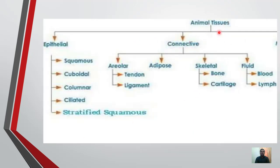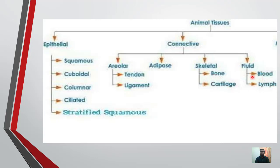Yeh ek flow chart diagram hai our topic ki, jis mein hum ne epithelial aur connective tissue ko discuss karna hai. Epithelial tissue ki aage further subdivisions hain: squamous epithelium, cuboidal epithelium, columnar epithelium, ciliated columnar epithelium, and stratified squamous epithelium. Connective tissue also has four subdivisions: Areolar, Adipose, Skeletal and Fluid. Tendons connect bone to muscles and ligaments connect bone to bones. Skeletal includes bone and cartilage; Fluid includes blood and lymph.